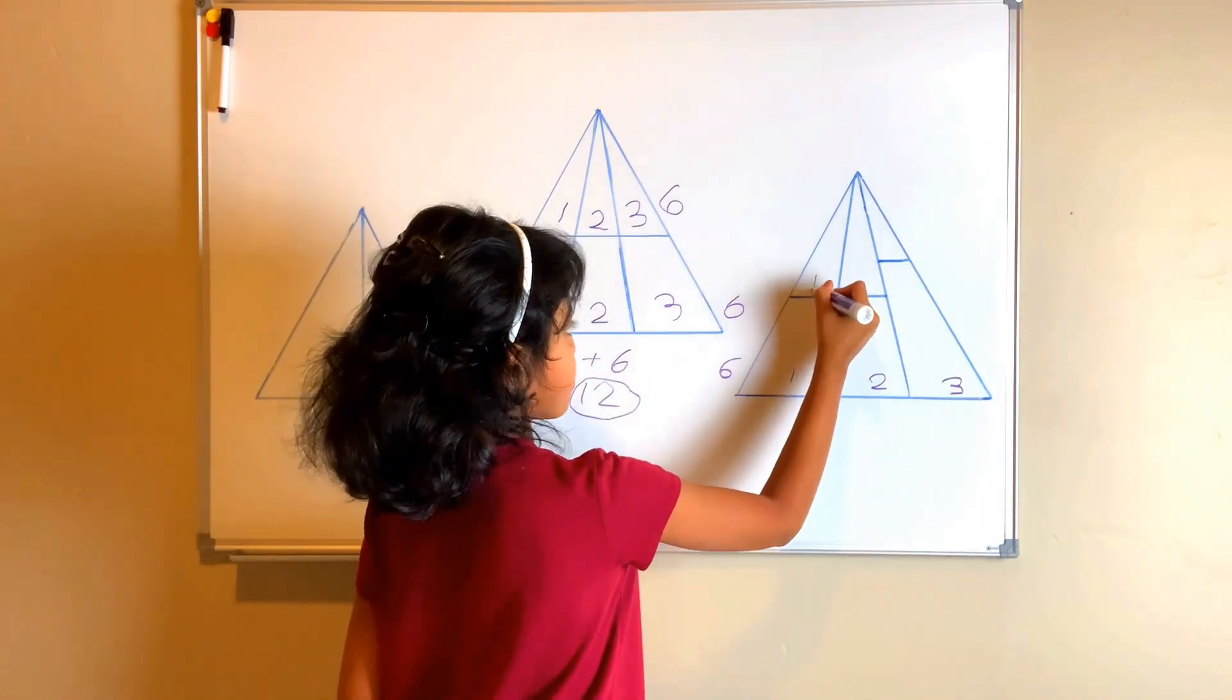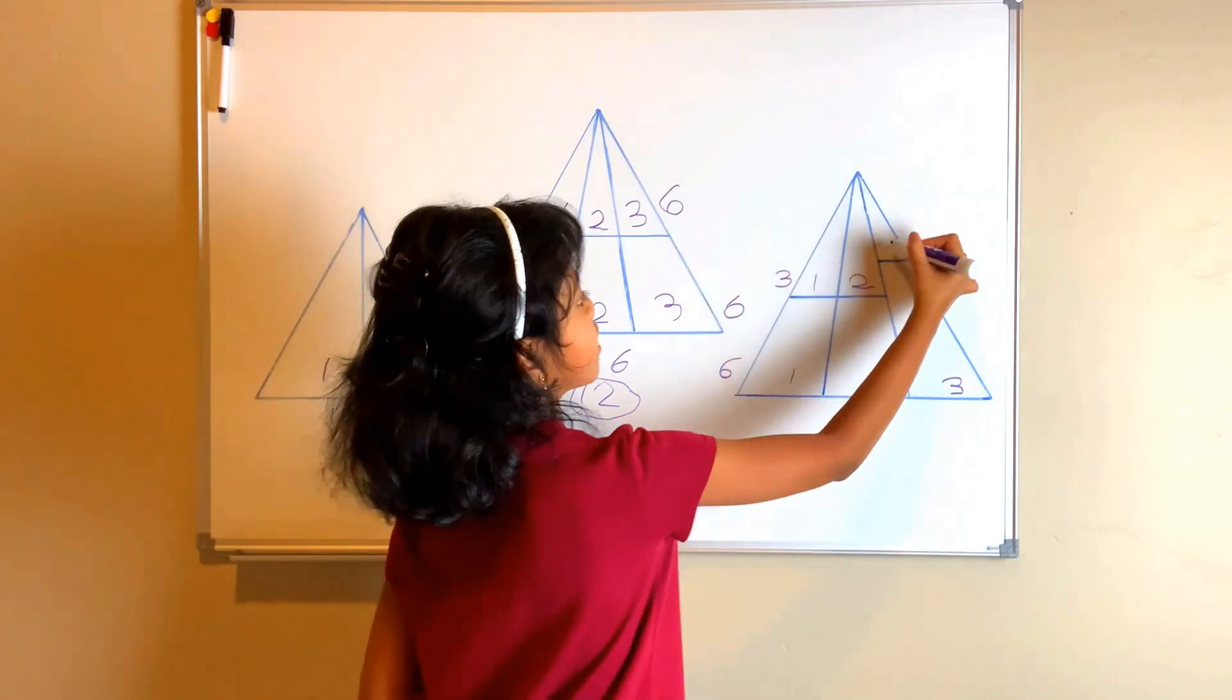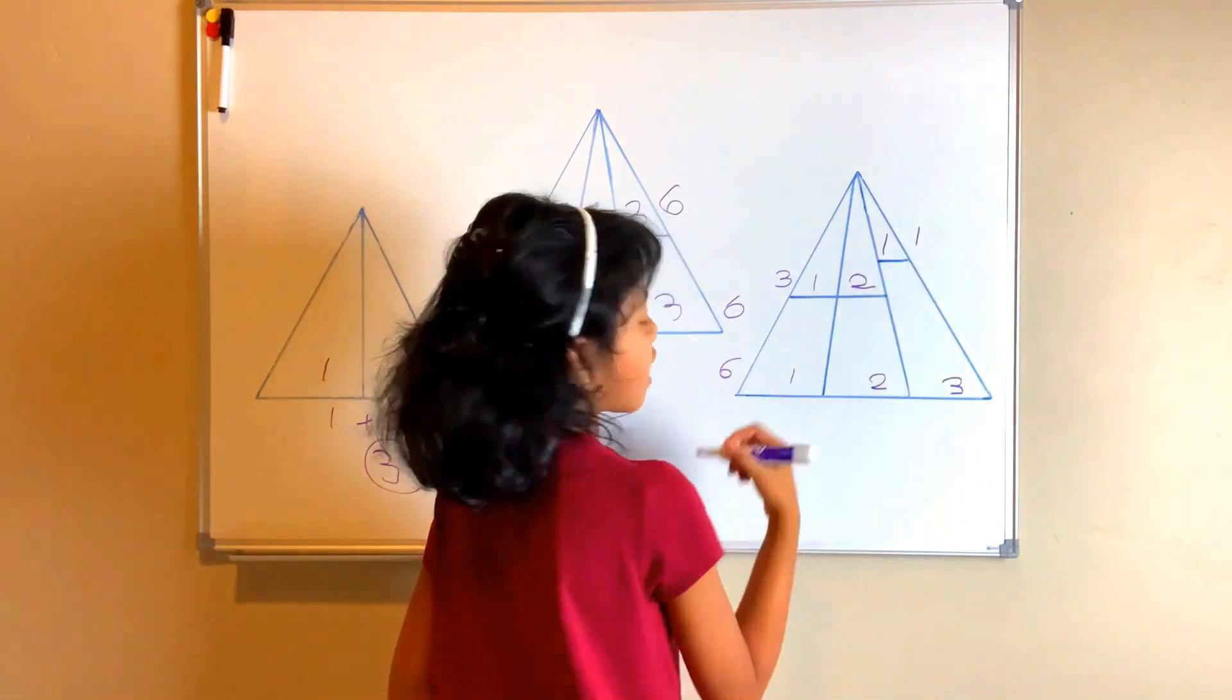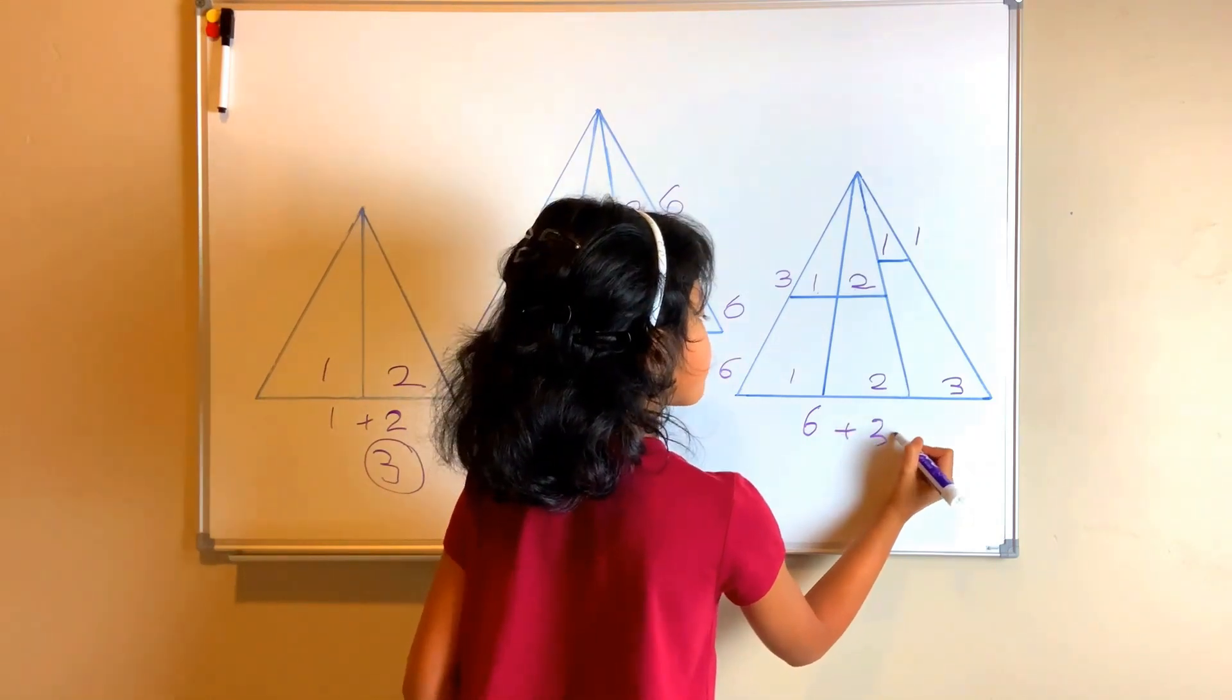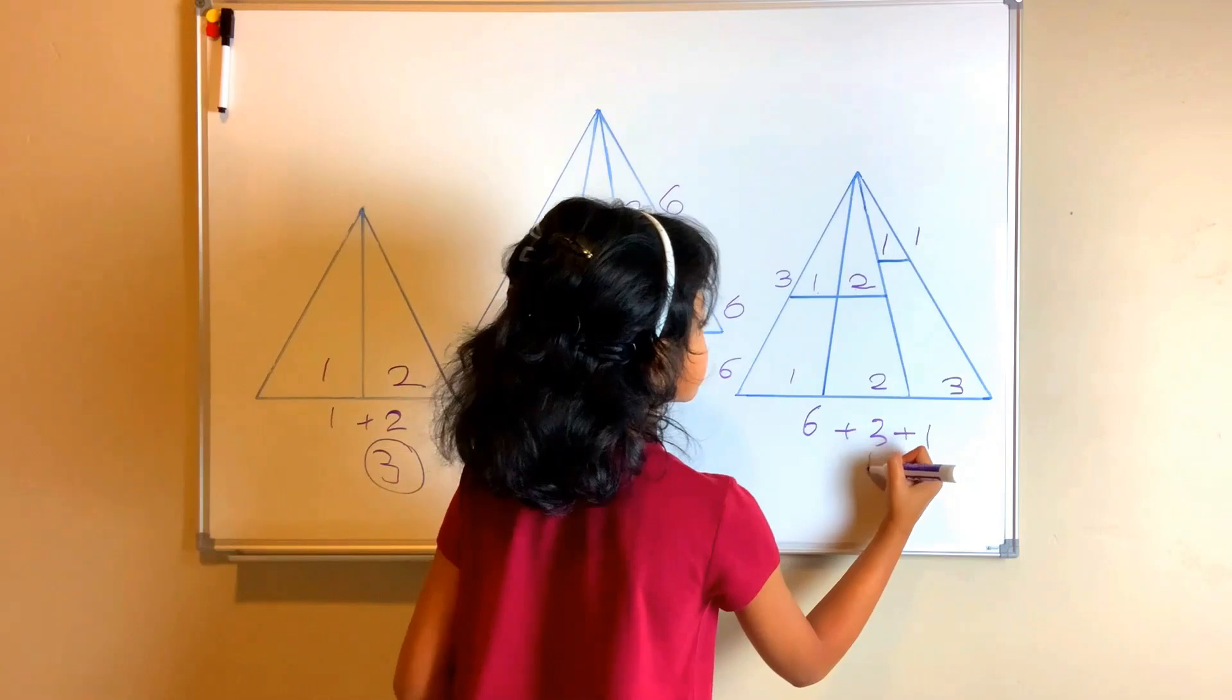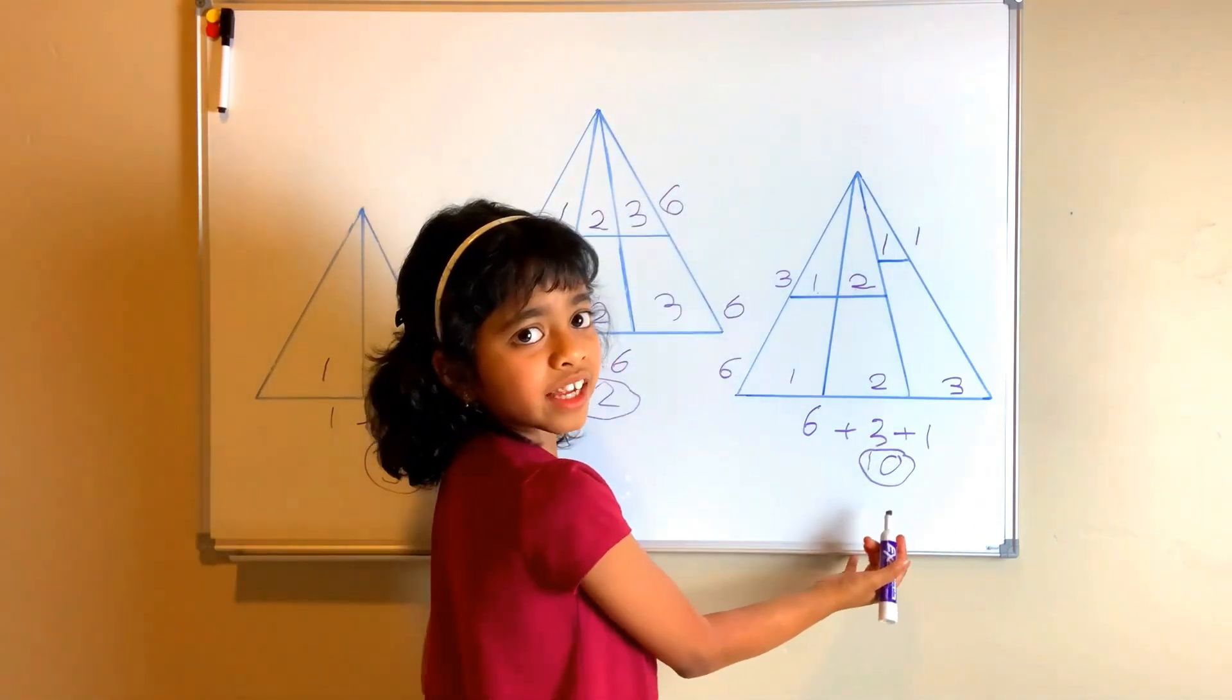Here there are two. One, two. That equals three. Here there's one. That equals one. Now let's add them together. Six plus three plus one equals ten. So there are ten triangles.